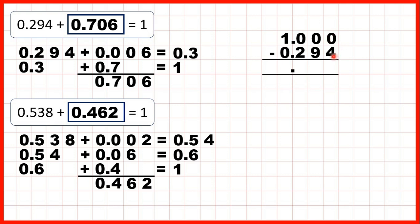But now we can copy down the decimal point into our answer and subtract using column subtraction. We can't do 0 minus 4 using the column method, and if we go to the left we have a 0, then another 0. So we need to exchange our one whole for ten tenths, then exchange one of those tenths for ten hundredths, and exchange one of those hundredths for ten thousandths. Now 10 minus 4 is 6, 9 minus 9 is 0, 9 minus 2 is 7, and 0 minus 0 is 0. So that gives us 0.706 — the same answer.